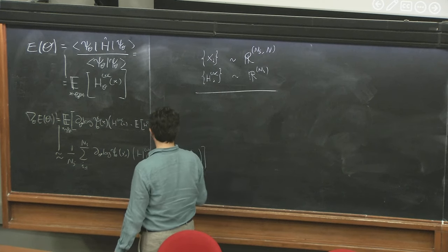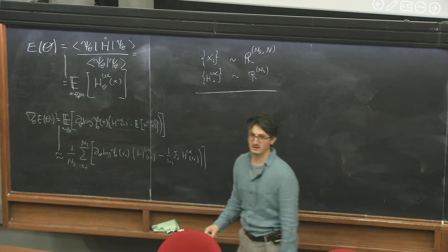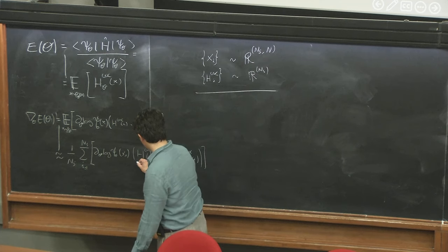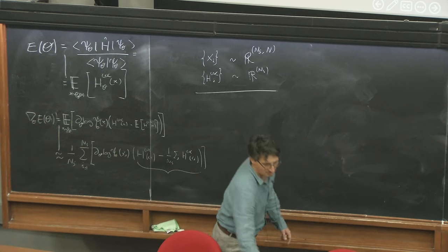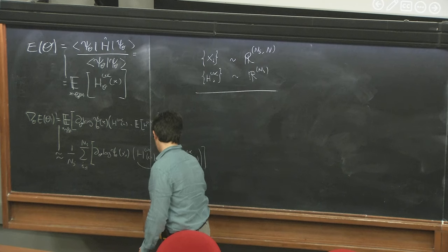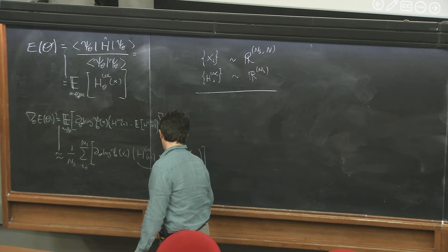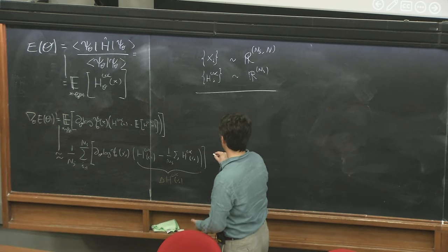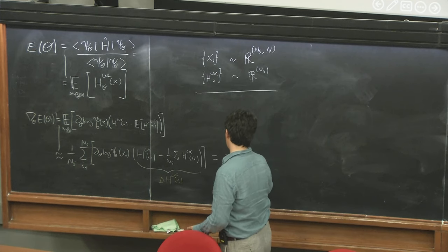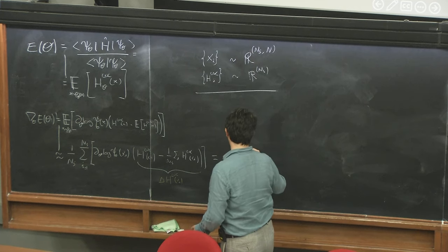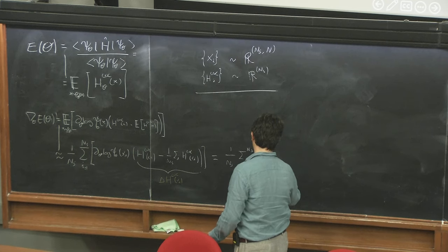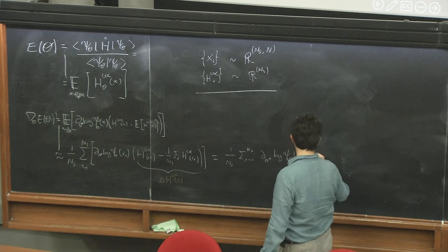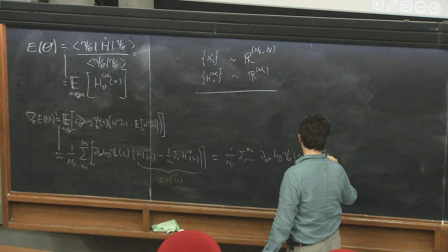In the spirit of clarity, I can rename this blob as delta H_loc(X_i). So my formula reads as: one over number of samples, sum over i from one to number of samples, of d_theta_star log psi_theta(X_i) times delta H_loc(X_i).